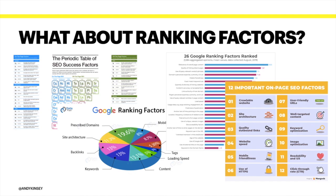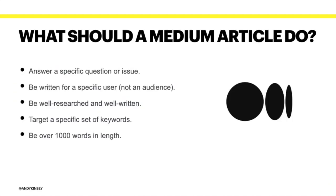You may have heard about all the different ranking factors. There are periodic table diagrams with people claiming different percentages — 26 of them, 12 of them — but actually there are hundreds and hundreds. You can search for Google patents going back to when they first started. The reality is, when it comes to optimizing your article on Medium, we're going to focus on just a handful, because Medium takes care of the vast majority of those factors.